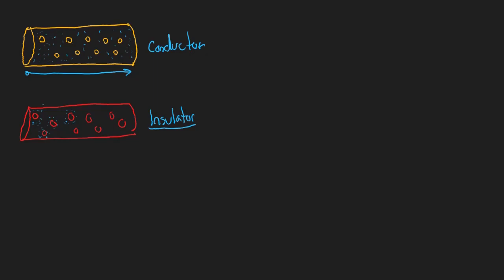Now we know that charge, which we understand in the form of electrons, can flow. Electrons can move from one atom to another, and we represent this concept as charge. Each electron has one negative charge. When we talk on a macro level, we talk not in terms of individual electrons but in terms of Coulombs — that's the unit we use for charge. One Coulomb is equal to 6.24 times 10 to the 18th electrons.